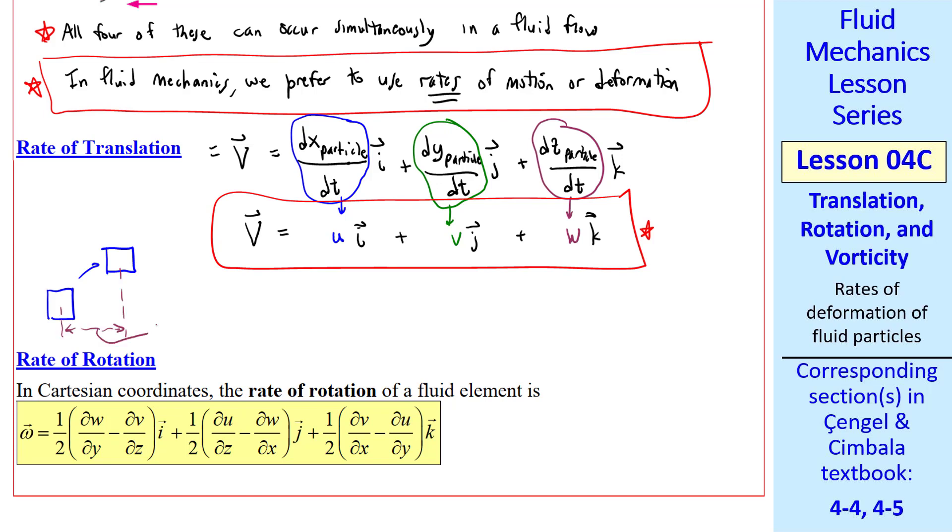To illustrate in a 2D plane, this distance would be dx particle, and this distance would be dy particle. The dimensions of velocity are, of course, length over time. The units of the magnitude of velocity are typically meters per second.